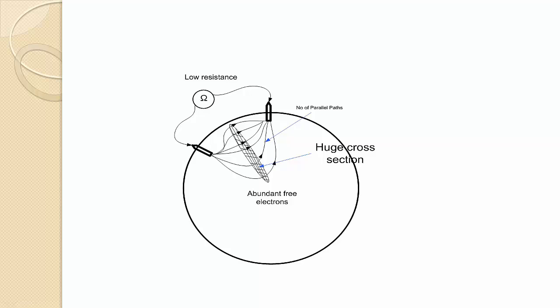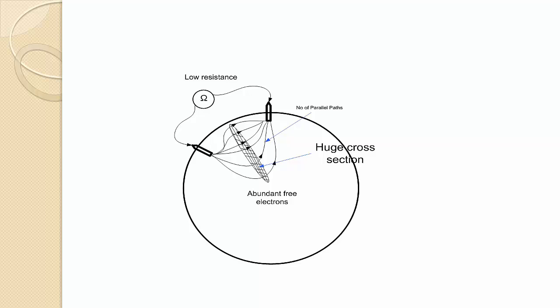So this explains why Earth offers low resistance to current and acts as a good conductor. One thing is that we have to make sure that we get a good contact with the general mass of the Earth through good grounding techniques, to minimize the contact resistance between the Earth electrode and the Earth.